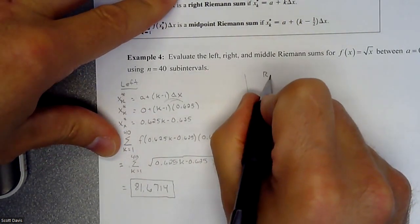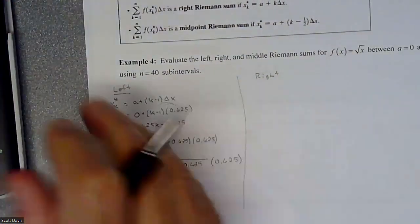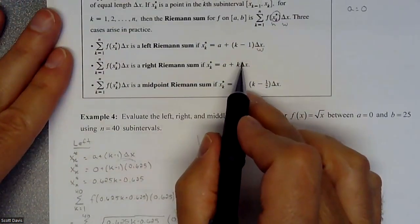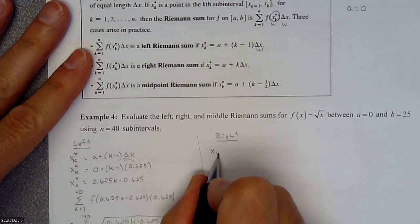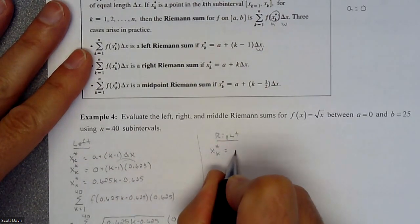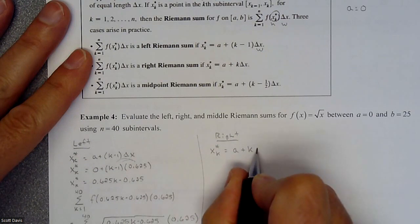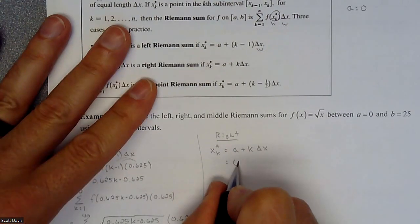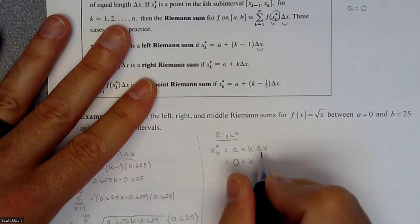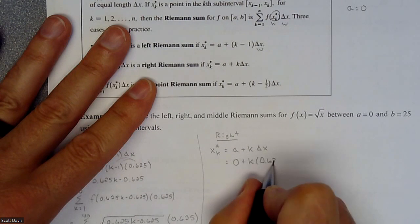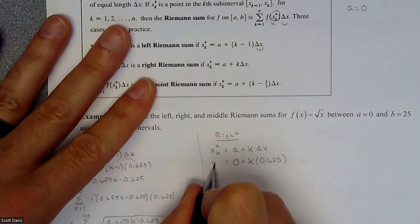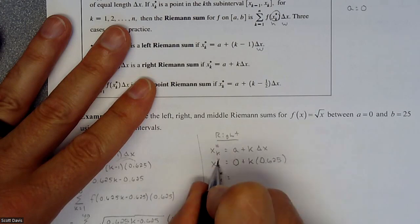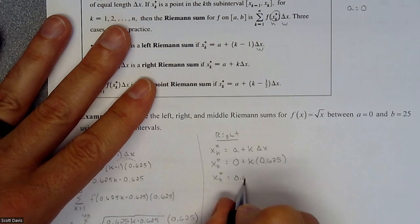Now we do the right Riemann sum. Things are not going to be drastically different — it's all about this little formula changing. For a right Riemann sum, x_k* is going to be a plus k times delta x, which is our width.